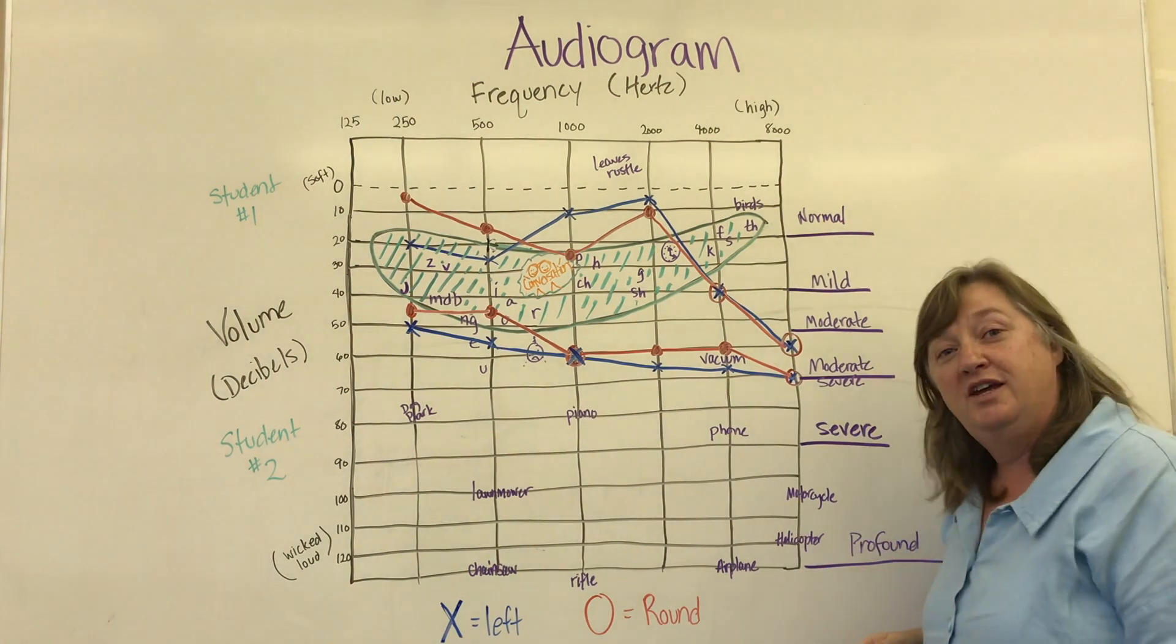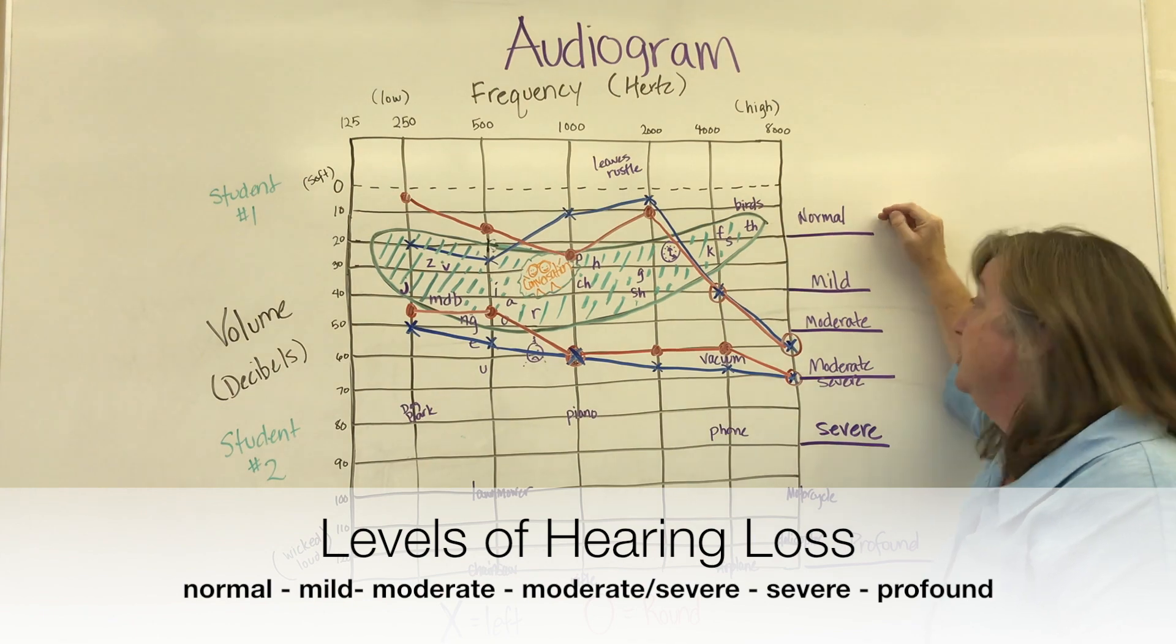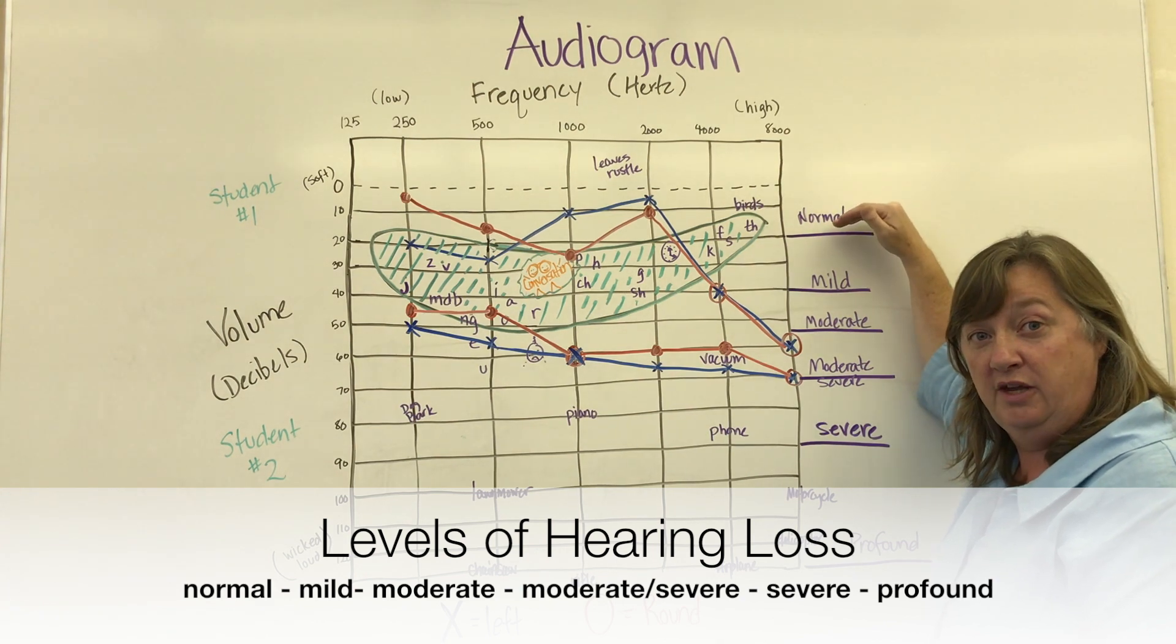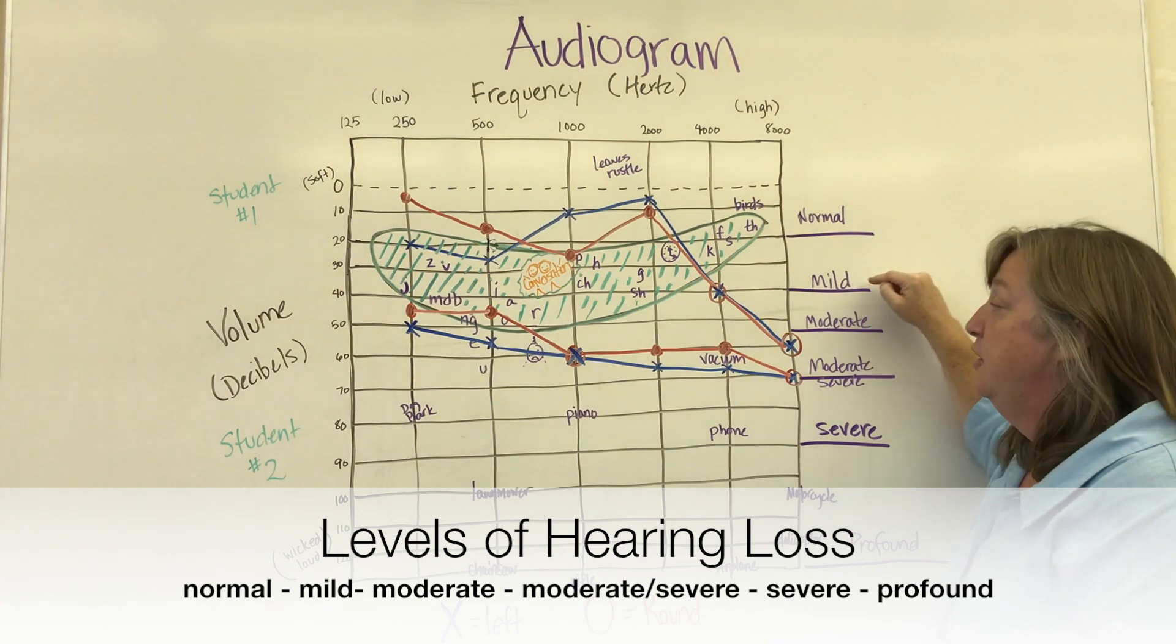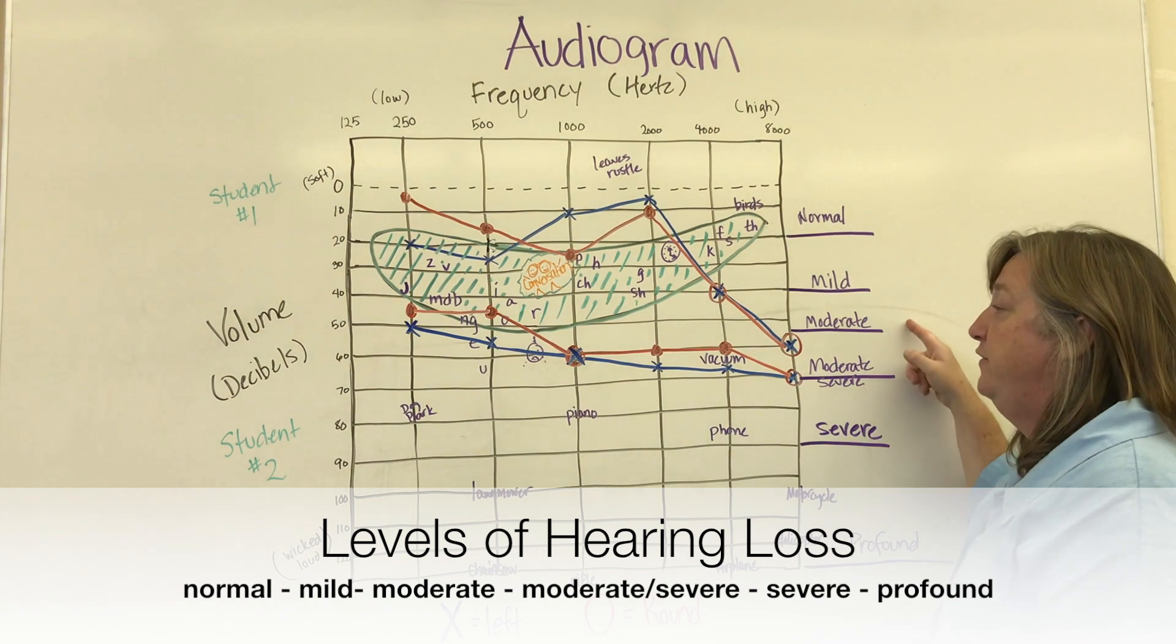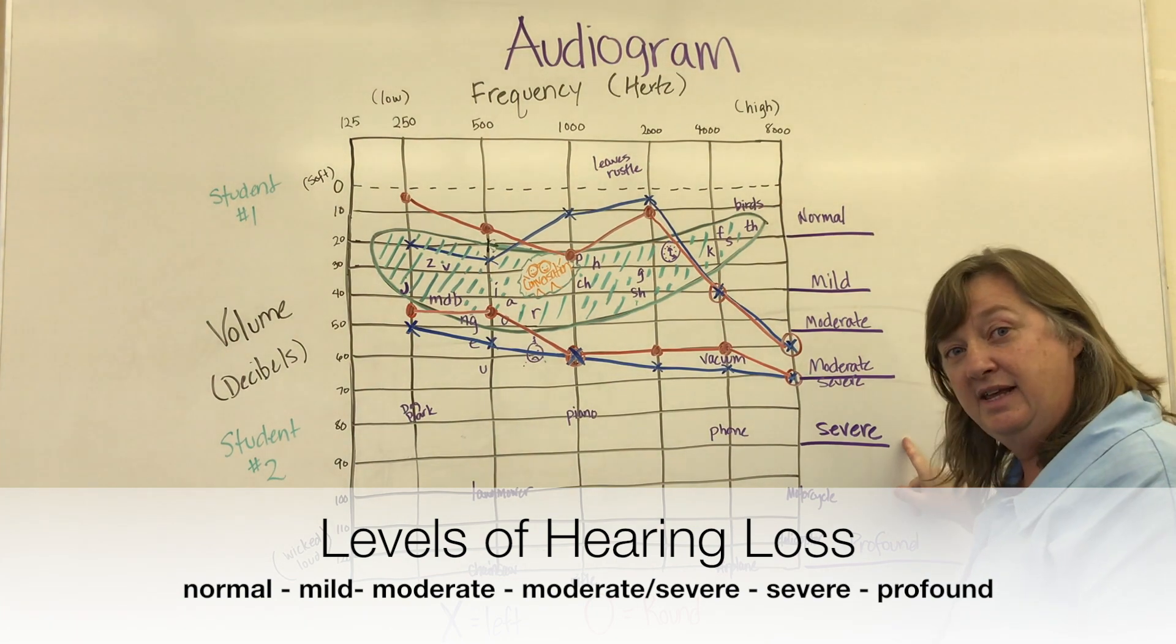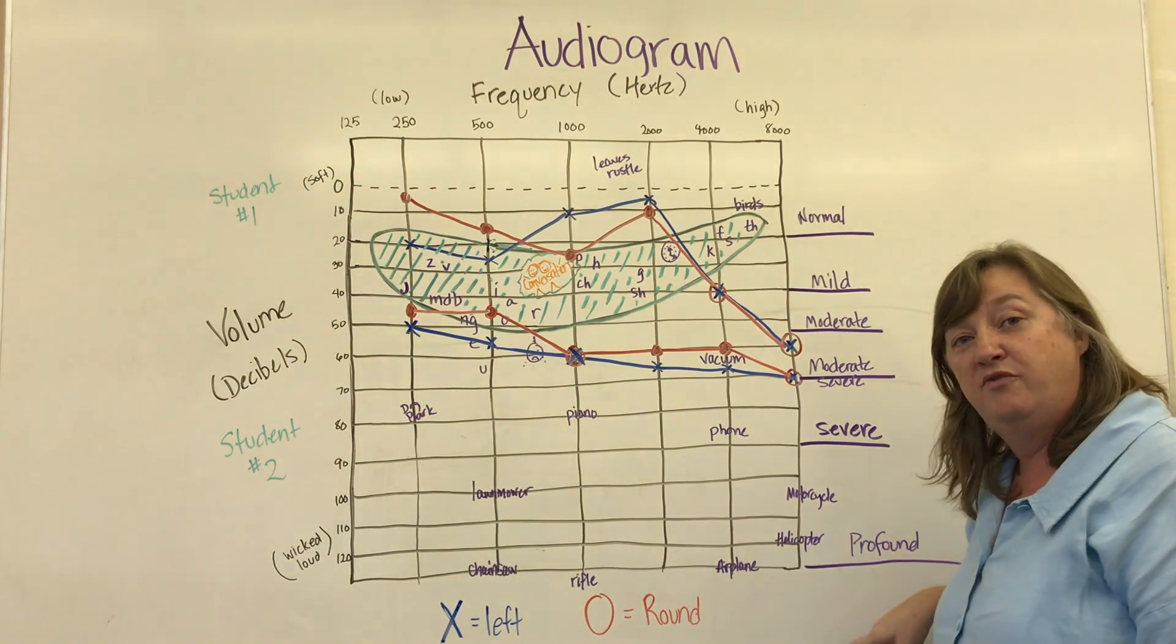Over here we can see the levels of hearing loss. So anything from below 0 to 20 is considered normal hearing. Anything from 20 to 40 is considered a mild hearing loss. 40 to 50 is a moderate hearing loss. 50 to 70 is moderate severe hearing loss. 70 to 90 is severe and from 90 on up is a profound hearing loss.